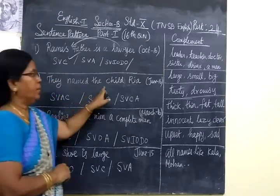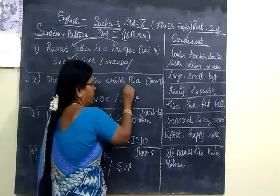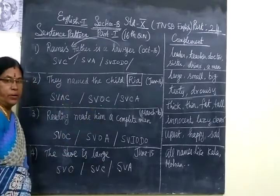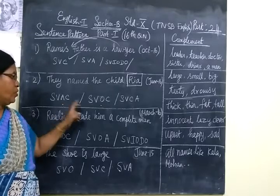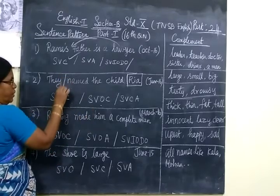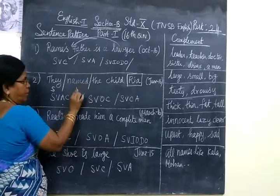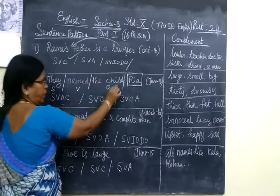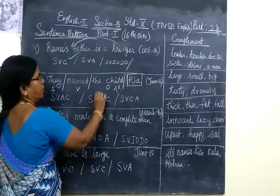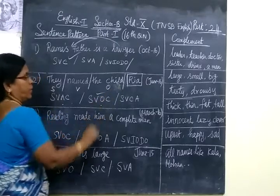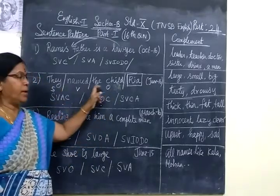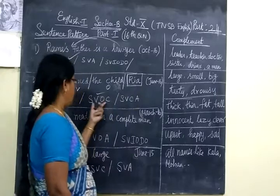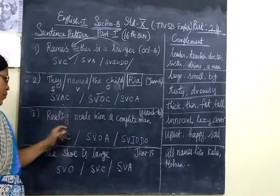They name the child Real. The sentence is ending in the name Real. So definitely you can select the first one or second one. You may be confused to select whether first or second. For that you are seeing: they is the subject, name is verb, the child is object. The child object, it is not A. So you can select the second one, SVOC. They name the child Real. This sentence is ending in the name Real.